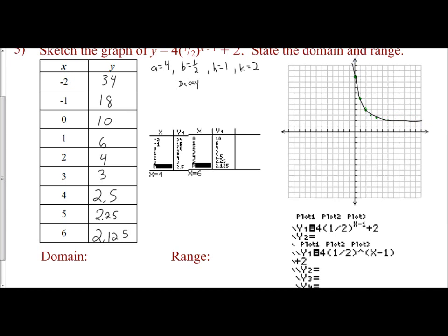Now let's state our domain and range. The domain is all real numbers for our x's. In our range, we can see on our graph it's approaching 2. But I always like to look at my k value. The k value assists us with our range. Our range, our y, has to be greater than 2. It's approaching that line, but it will never cross it.